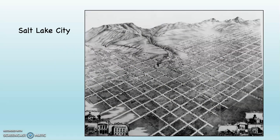This is Salt Lake City. You can see the main Mormon temple right here, and you can see the whole city is set up along this grid pattern, mostly in these 660-square-foot blocks.